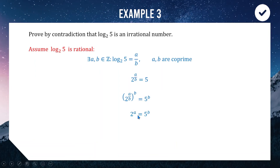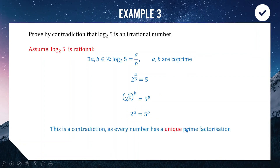This is already a contradiction. There is no number that could simultaneously be a power of 2 and a power of 5, because every number has a unique prime factorization. You cannot write a number as a product of 2s while also writing it as a product of 5s. Therefore, our assumption was false, and log₂(5) must be an irrational number.